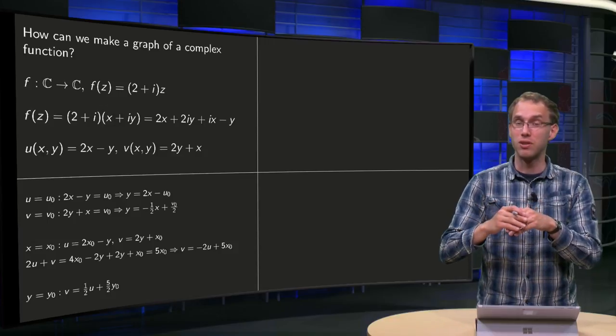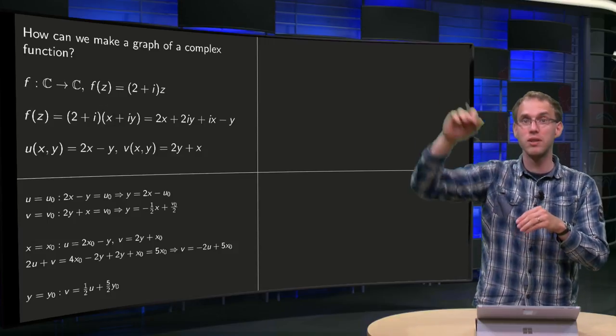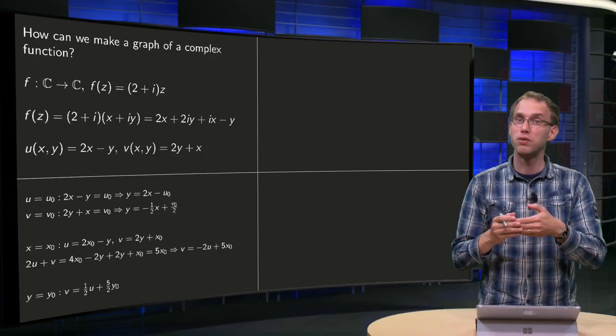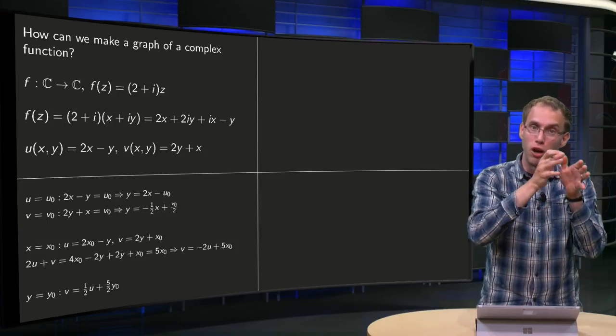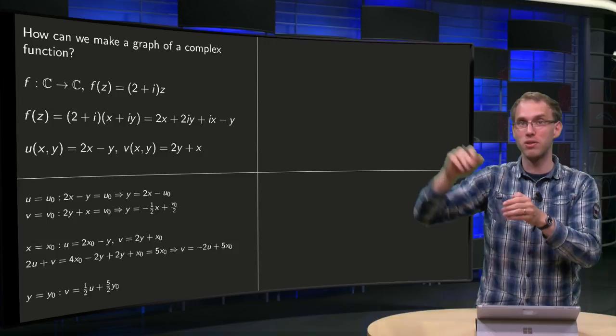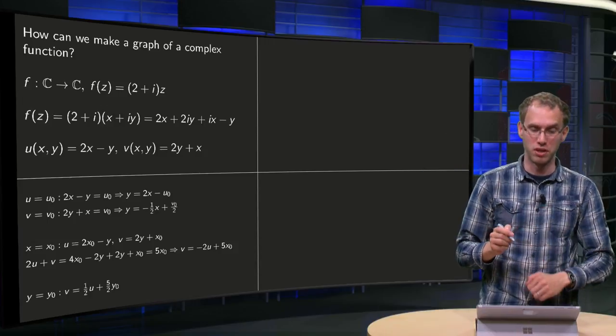And then we look in the uv plane at lines where v is constant, and then we look at the pre-image of those curves. So we look at which curves in the xy plane are mapped to curves where v is constant. So that is the first thing we can do.